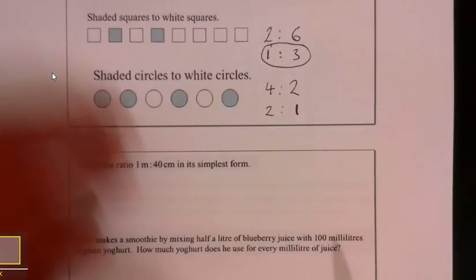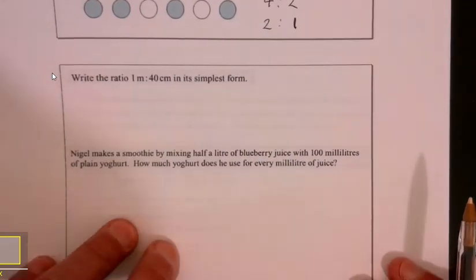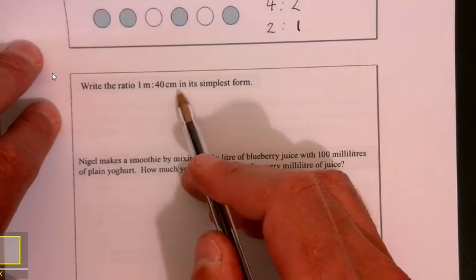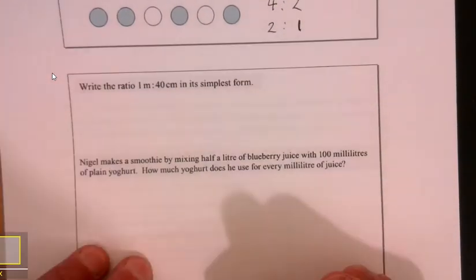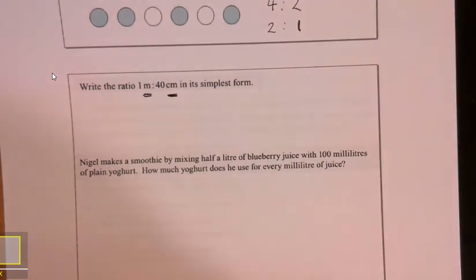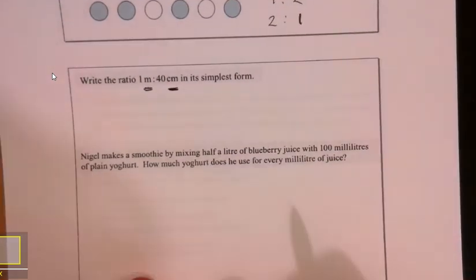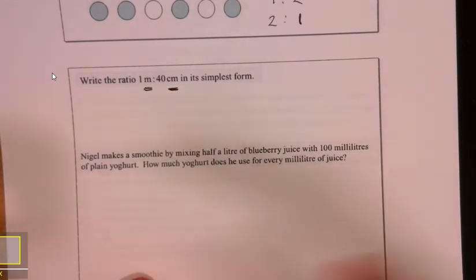Write the ratio one meter to 40 centimeters in its simplest form. Why this is slightly trickier is because we're mixing the units. It's just something to look out for. Always be careful when the units are mixed up. The first thing you've got to do is change it.